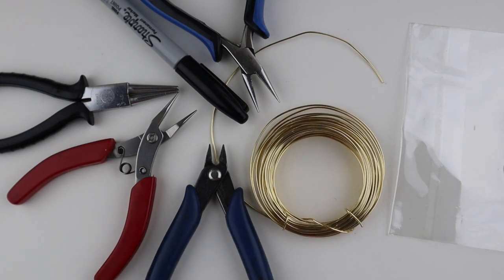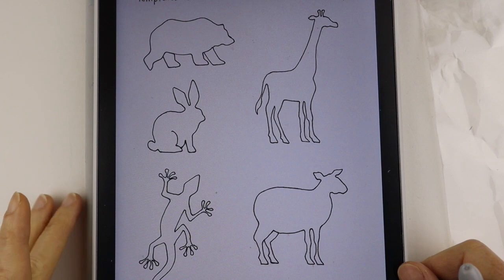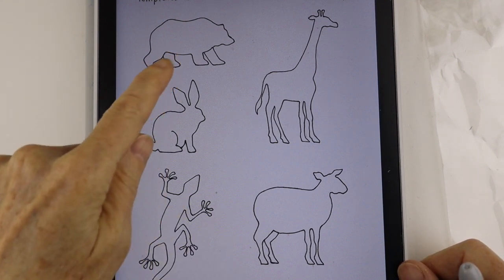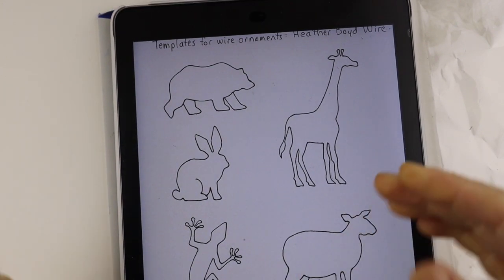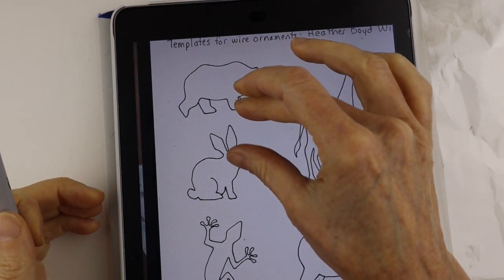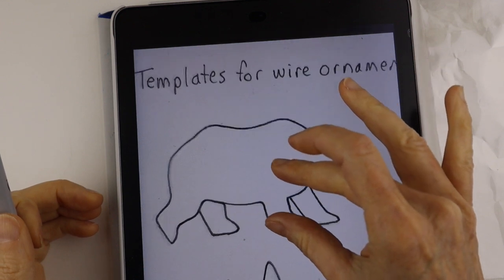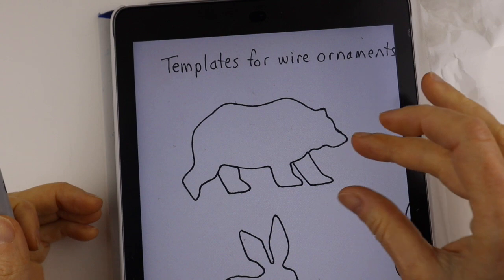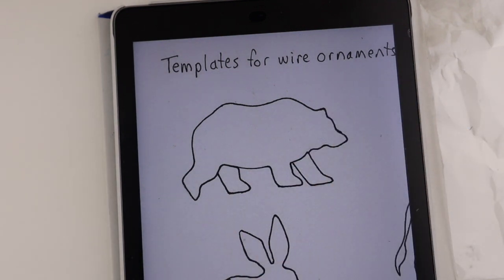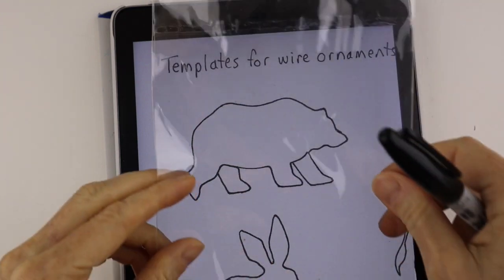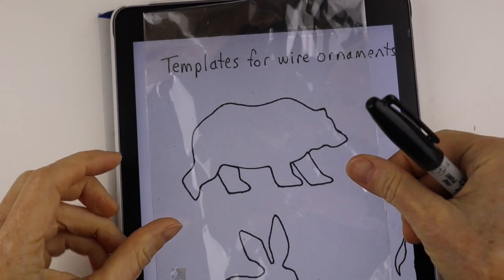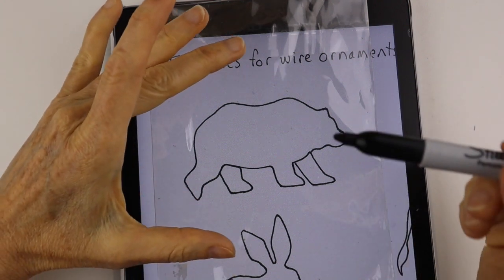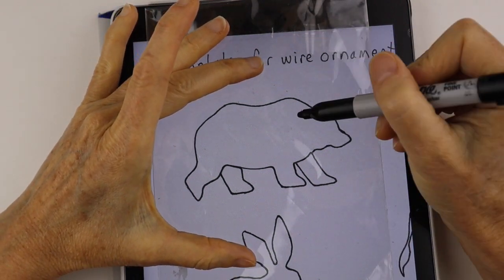I made up some templates for the different animals and the bear here for Susan. I would just enlarge it on my iPod to whatever size that I want, or my iPad. You can always print them out on your computer and adjust the size as well, but if you don't have a printer, we can just stick the plastic acetate on top and trace it.